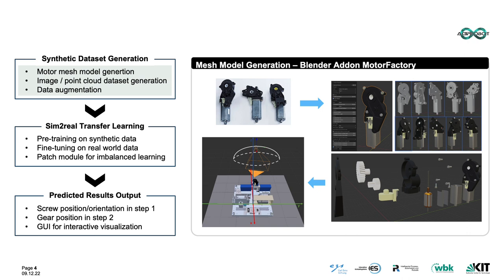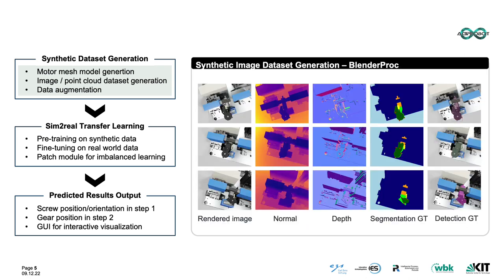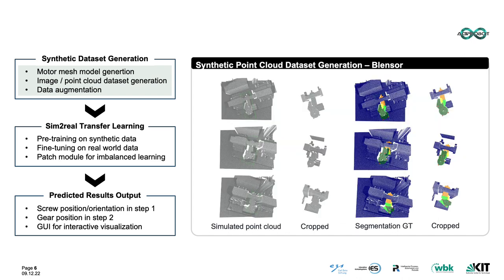Based on the motor templates we have currently, we created a Blender add-on named Motor Factory, which can generate motor mesh models with a variety of specifications. With those mesh models, corresponding synthetic images and point clouds can be generated in a Blender scene. Note that all semantic labels are generated automatically — no manual labeling is required.